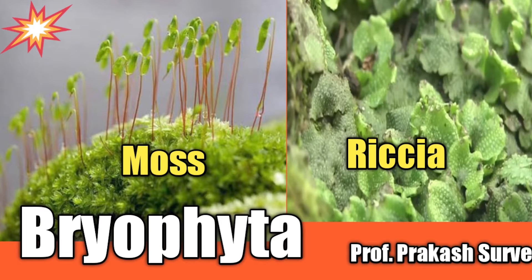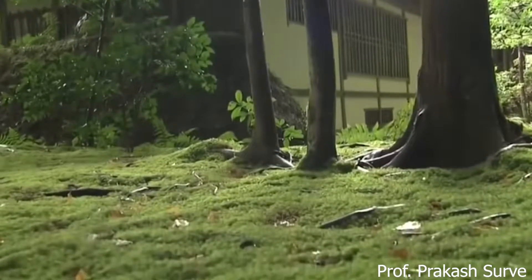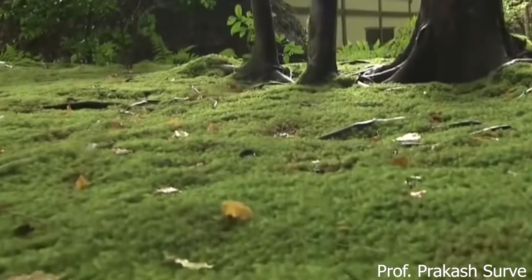Welcome to my channel. Today we will see about the Bryophyta. Bryophyta has two main groups: the liverwort, example is Riccia, and the moss, example is Funaria. They are mostly terrestrial plants found in moist and shady places.